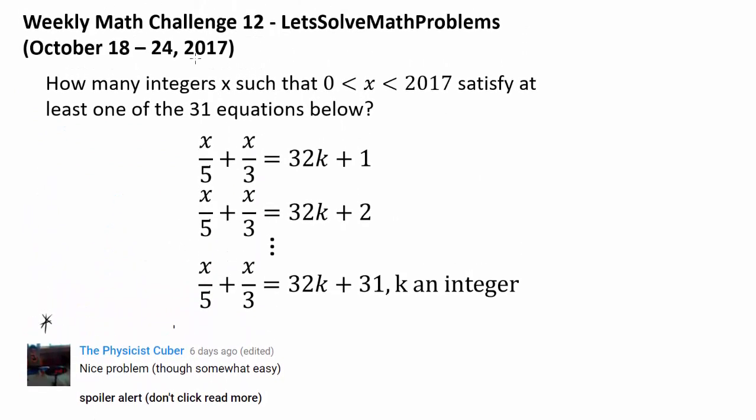So we want to find how many integers x between 0 and 2017, not including 0 and 2017, that satisfy at least one of the 31 equations below. And if you see the 31 equations, where k is an integer, you have 32k plus 1, 32k plus 2, 32k plus 31.